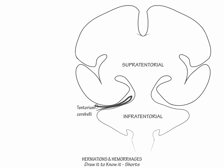Now let's show the three forms of supratentorial herniation that exist. Indicate that in subfalcine herniation, one hemisphere herniates underneath the falx cerebri. Next, show that in uncal herniation, the medial temporal lobe — the uncus — herniates over the tentorium cerebelli. Then show that in central herniation, also known as transtentorial herniation, the diencephalon herniates directly down through the tentorium cerebelli.